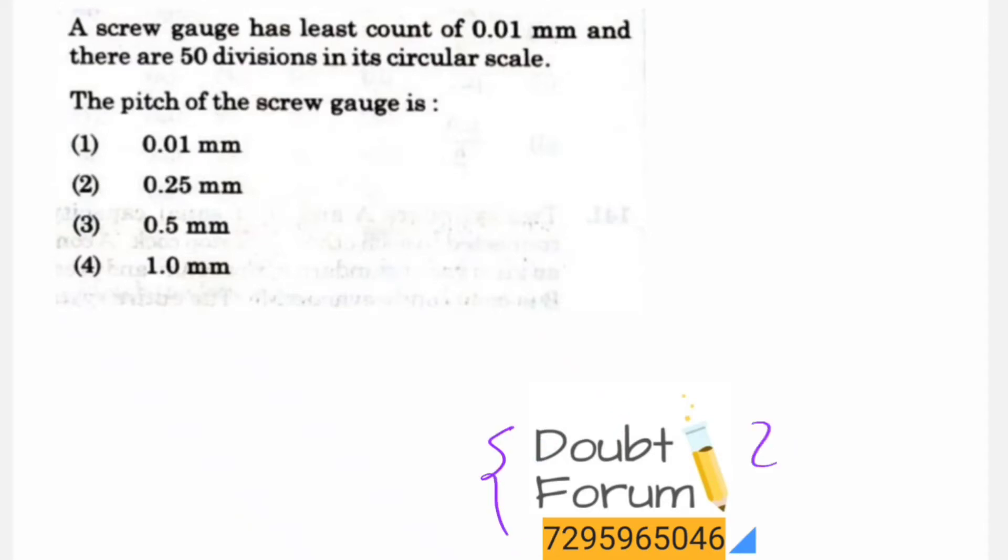Welcome to Doubt Forum. This question is about a screw gauge. The question says a screw gauge has a least count of 0.01 mm. The least count is the smallest value that can be measured by a measuring instrument, so this screw gauge can measure at least 0.01 mm.